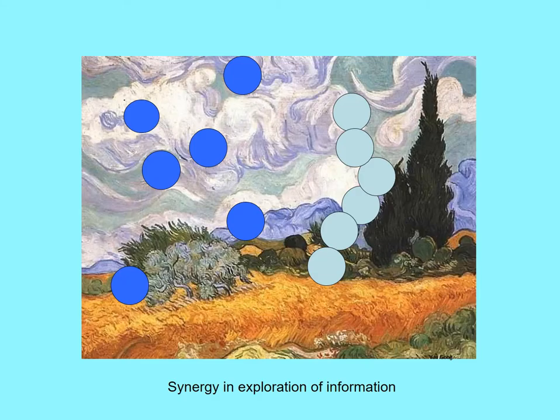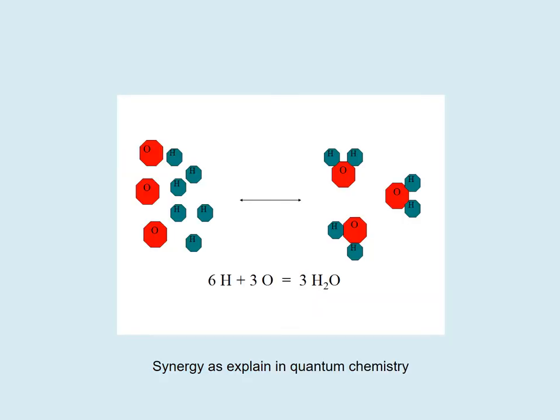Synergy in information is also very important. Here we see that explorations by dots in dark blue are less efficient than explorations of dots in light blue. That is because the dots in light blue somehow coordinate their actions, producing a synergy. As we see, synergy is referred to in many cases where we don't fully understand what's actually happening.